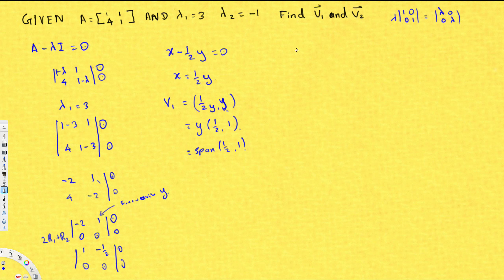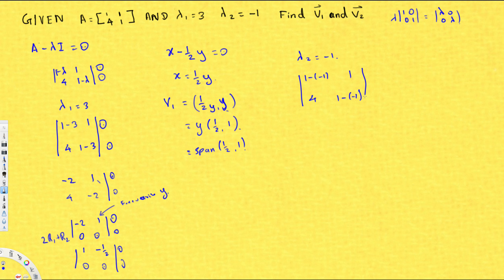For λ2=-1, we substitute -1 into (A - λI). We get [1-(-1), 1; 4, 1-(-1)], which gives [2, 1; 4, 2], and we set this equal to 0 on the other side.